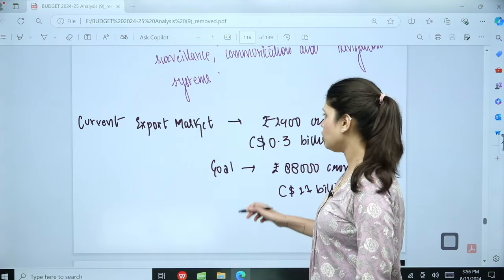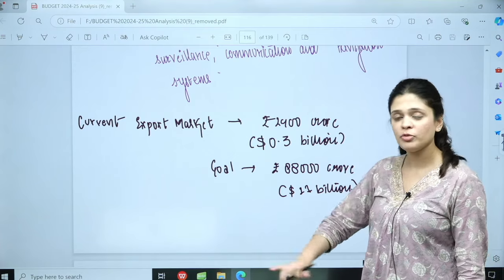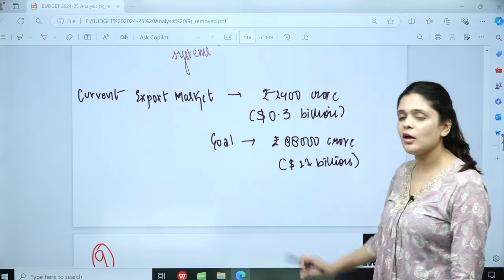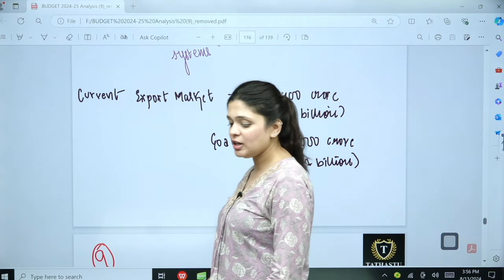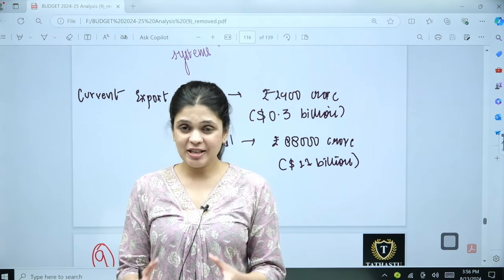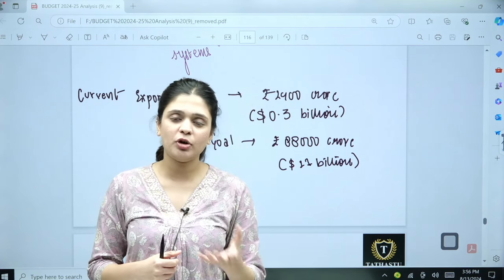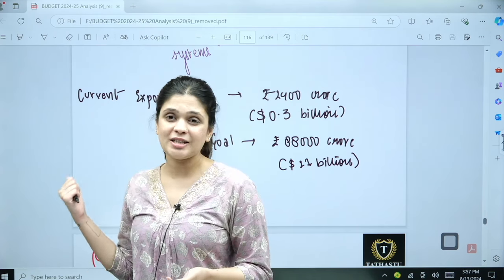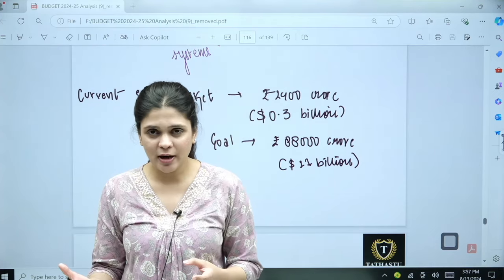If you talk about the exports right now, we export around 2400 crore rupees in the space economy that is 0.3 billion dollars. Our goal is to increase this to 11 billion dollars that is 88,000 crores. We are moving towards becoming more reliant in the space economy space sector. Towards becoming a Vixit Bharat by 2047, that is developed India, creating more job opportunities, creating entrepreneurship, more small enterprises and micro enterprises will be encouraged via this.